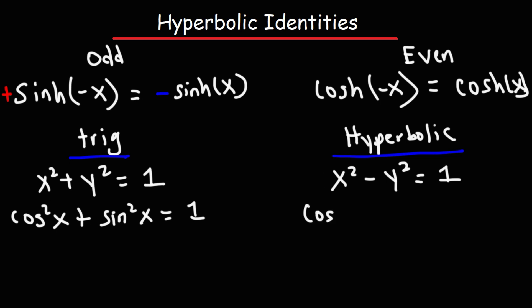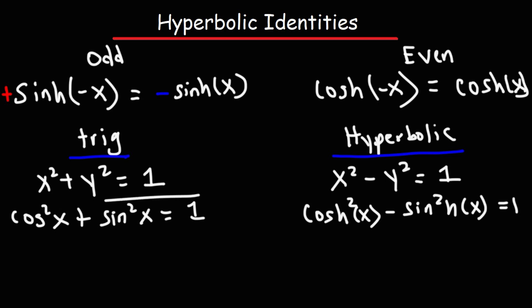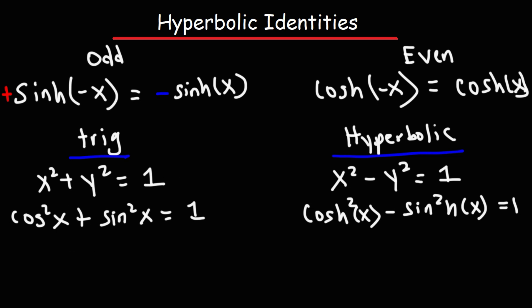From that hyperbola equation, we get this identity: hyperbolic cosine squared minus hyperbolic sine squared equals one. This is very similar to the trigonometric Pythagorean identity, but instead of a positive sign, we have a negative sign.